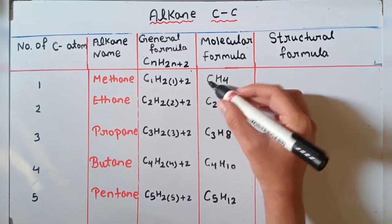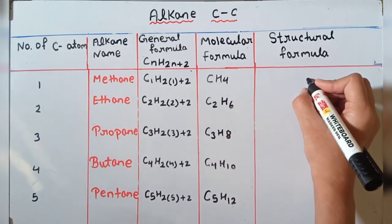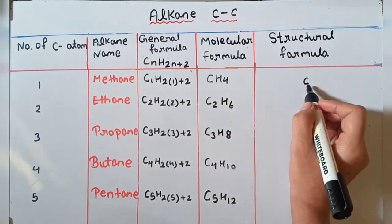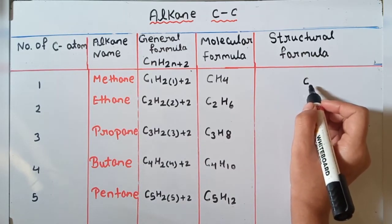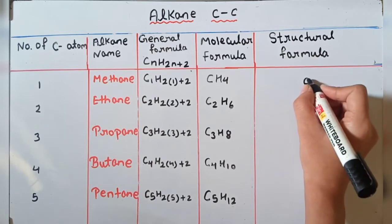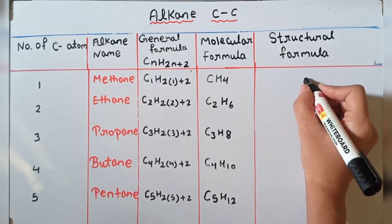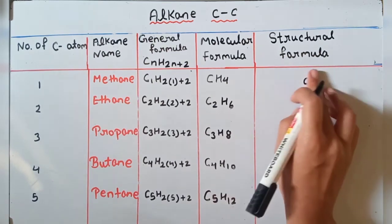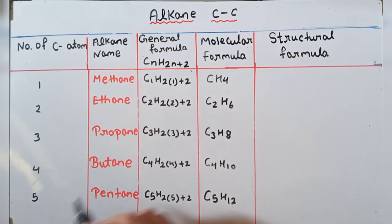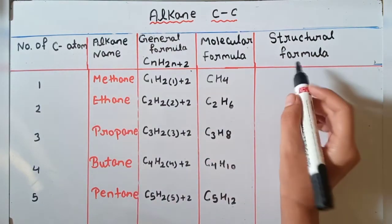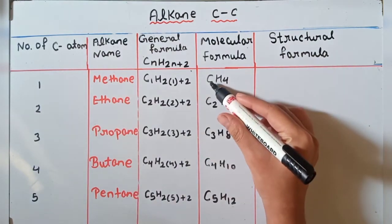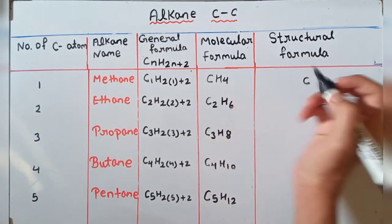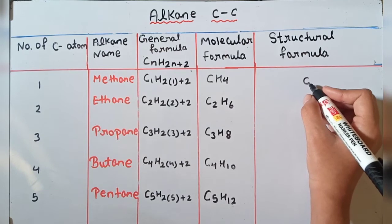Ab structural formula draw kar lete hain for methane. Number of carbon kitne hain — 1. Yahan par main draw karunga number of carbon 1. Aapko pata hai carbon ki valence 4 hoti hai. Carbon ke 4 bond hone hi chahiye. Carbon apni valency hydrogen ke saath share karke complete karti hai.